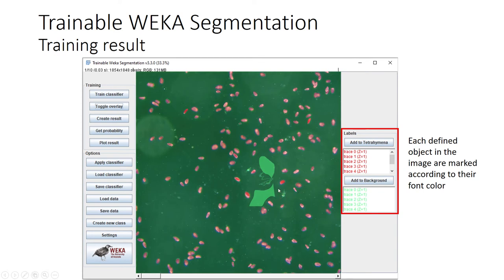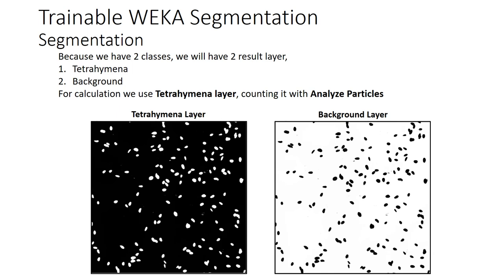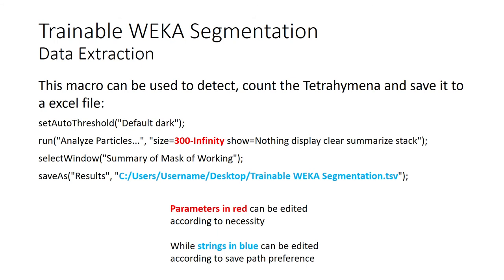Foreign objects are also mostly marked green rather than red. Since we have two classes — Tetrahymena and background — the result will have two layers. If you have more labels, it will produce more result layers. For counting, use the Tetrahymena layer and count it using Analyze Particles, the same as the Particle Analyzer Method. A macro is provided to count the Tetrahymena and save it to an Excel file — it uses the same commands as the PAM macro but only the fraction relevant to TWS.